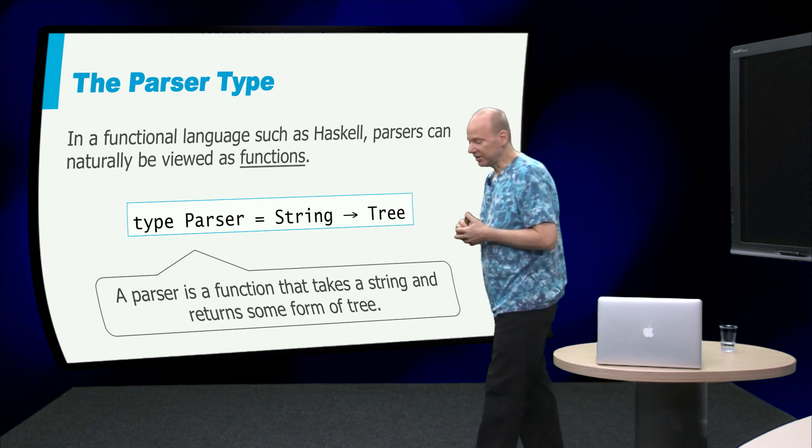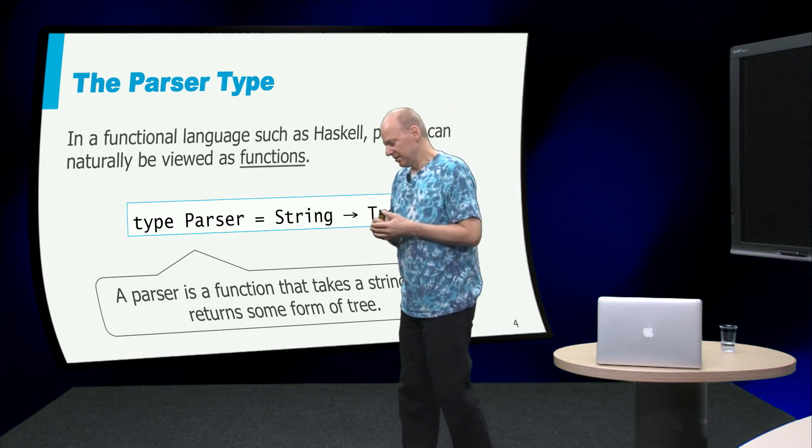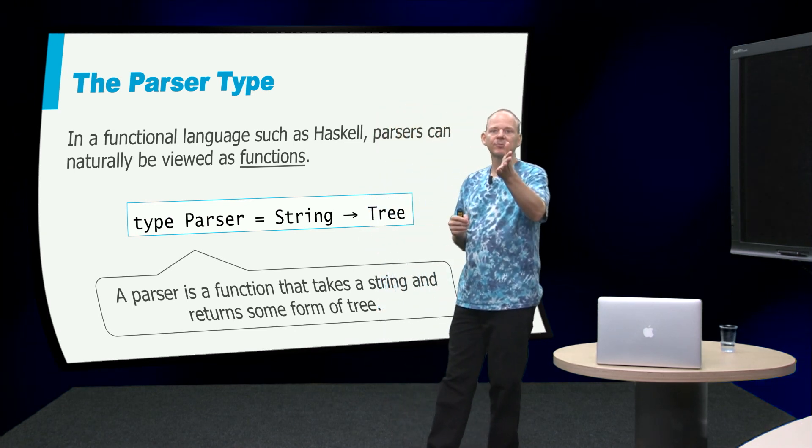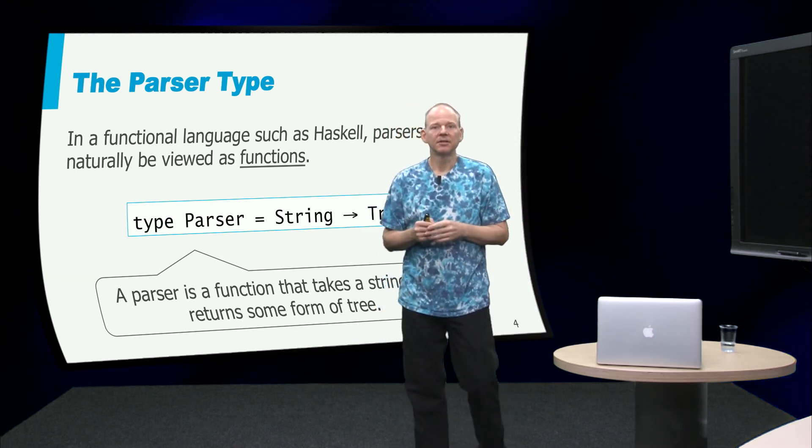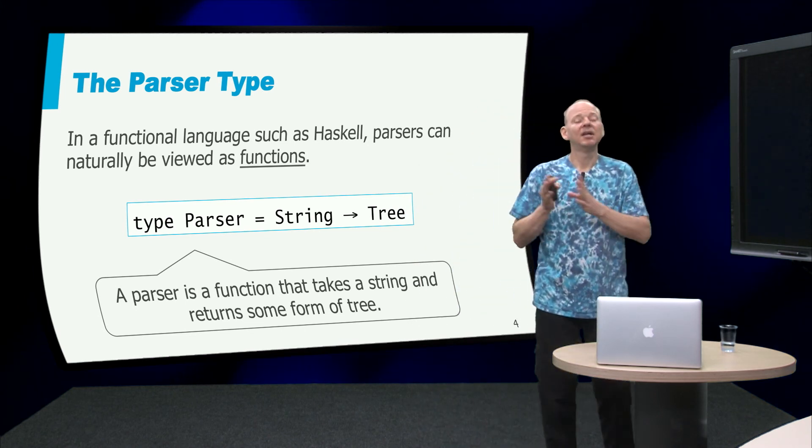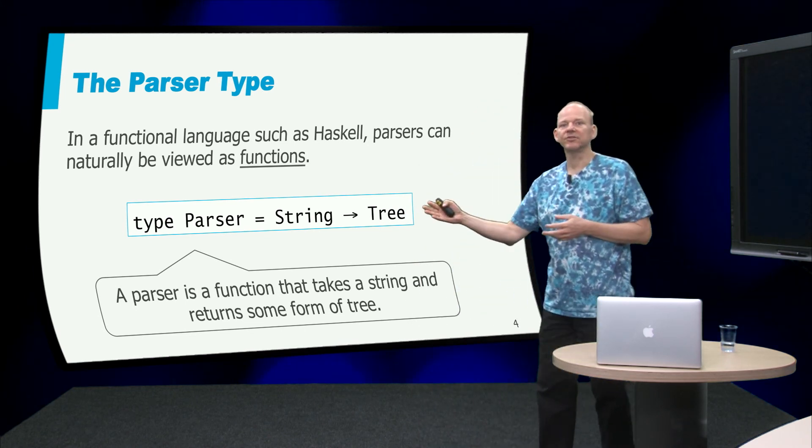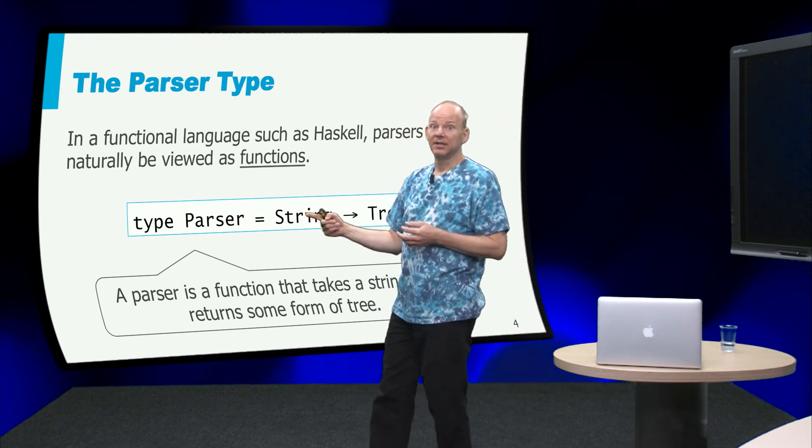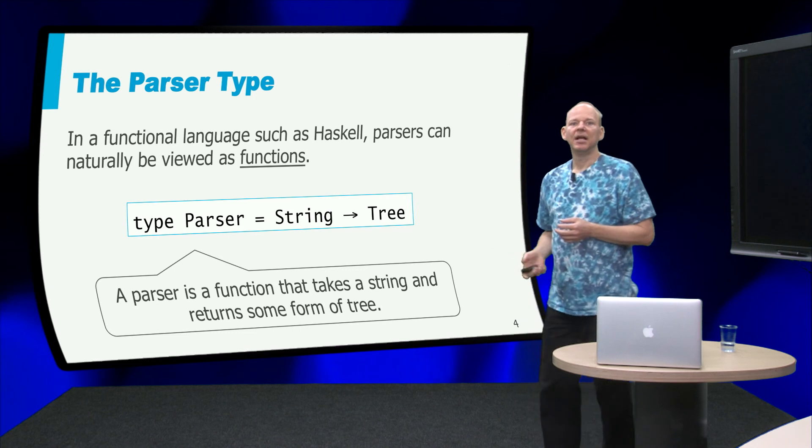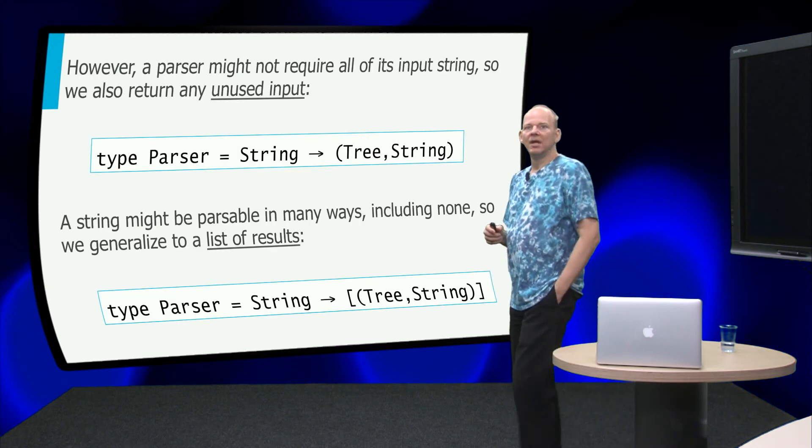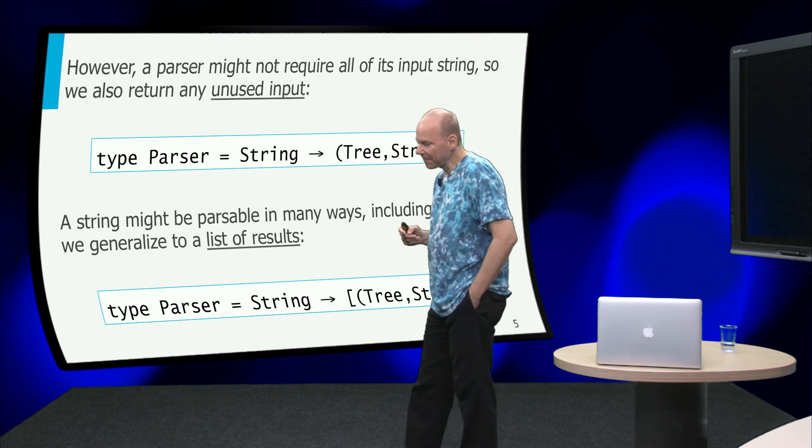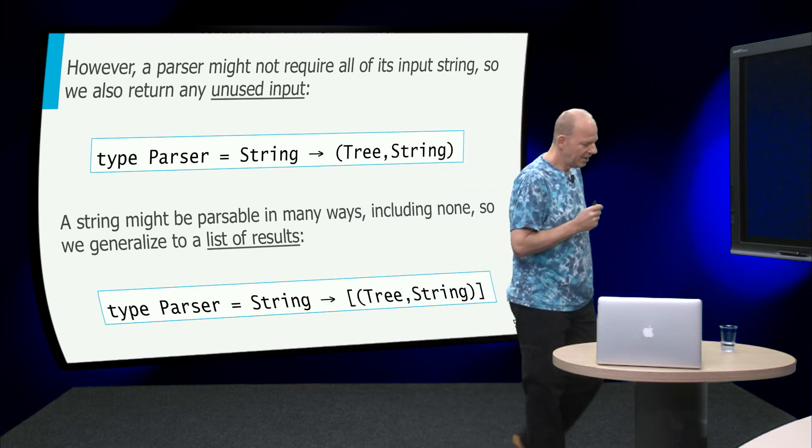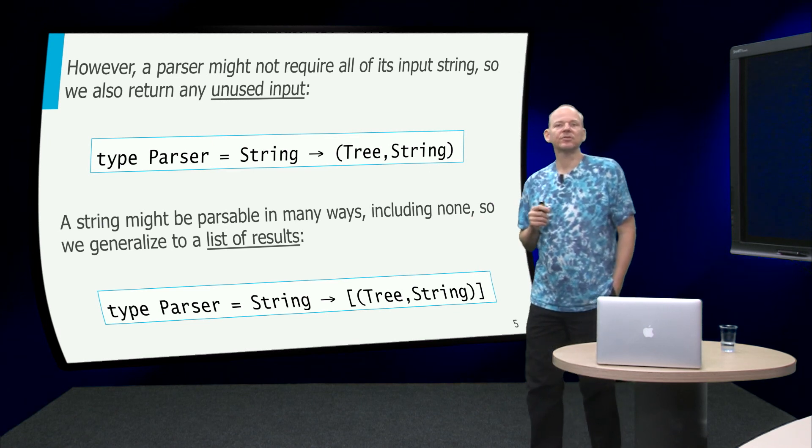Let's look at the type of parsers. Let's formalize that, so here we have a function from string to trees. That picture that we showed took a string and turned that into a tree, so we just defined a type synonym here, parser, that's a function that takes a string and returns a tree.